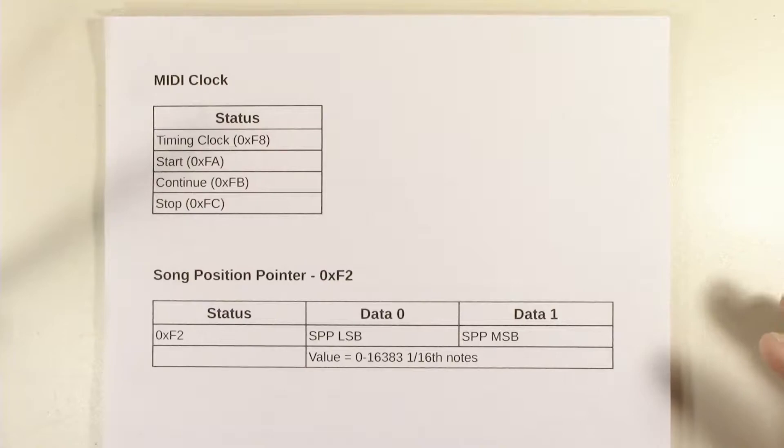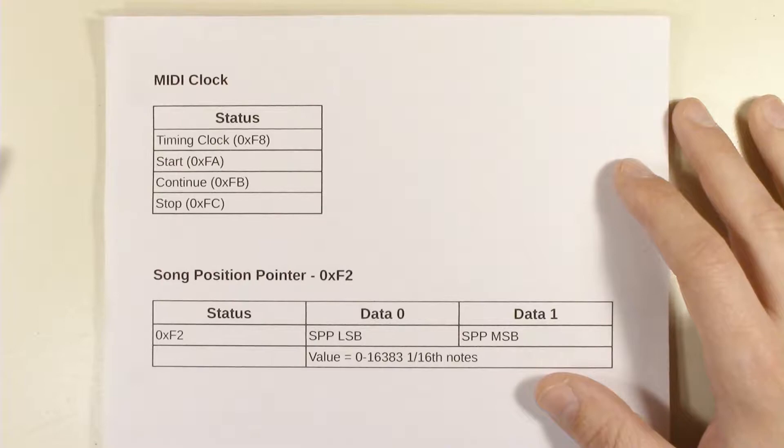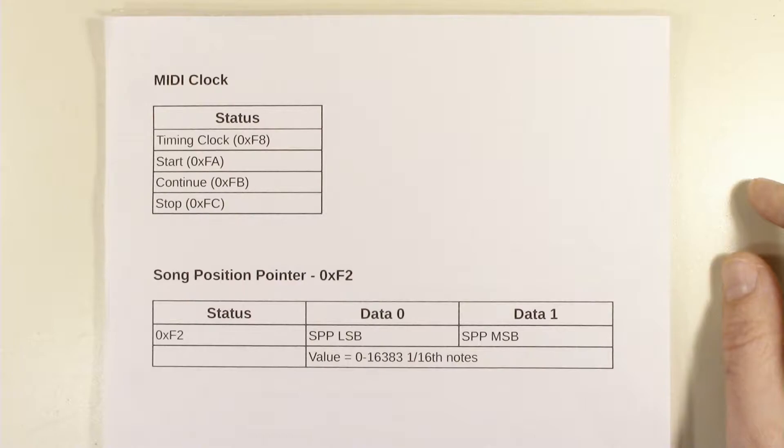MIDI clock is a way that we send the timing information between different devices that are supposed to be playing something in sync. So let's start with an example of where you wouldn't need MIDI clock. MIDI clock is not used when you have a sequencer playing notes on a synthesizer because the timing information about those notes comes from the notes themselves. Everything that the sequencer sends the synthesizer responds to and that's all there is to it.